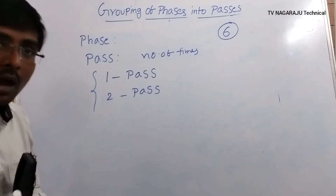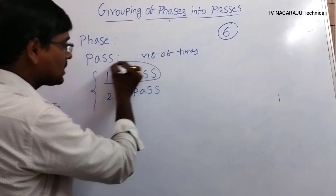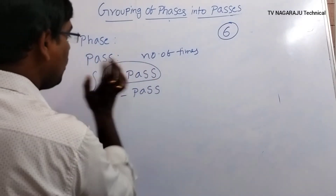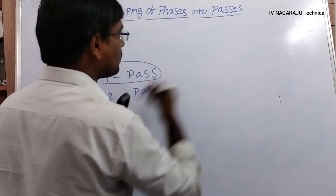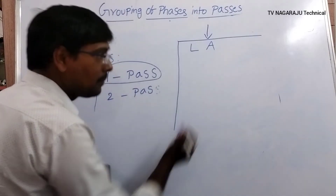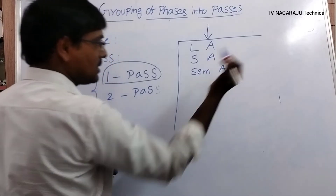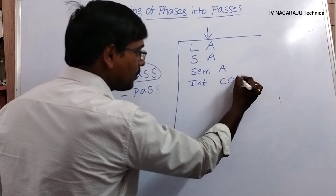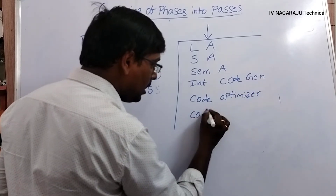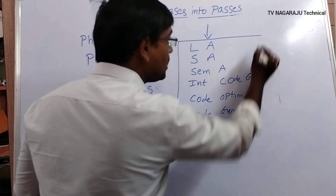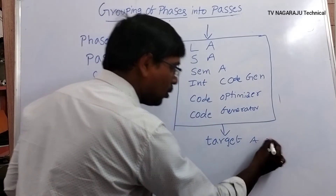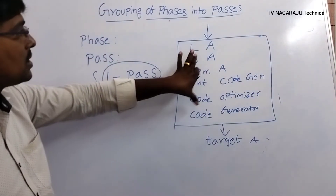What do you mean by a one-pass compiler? All six phases are grouped into a single pass — that is called a one-pass compiler. The source program is passed sequentially through the lexical analyzer, syntax analyzer, semantic analyzer, intermediate code generator, code optimizer, and finally the code generator. All six phases are grouped into a single pass, and it produces the target assembly code as output. This is called a one-pass compiler.